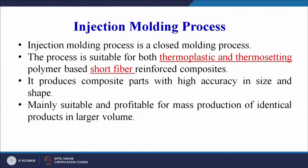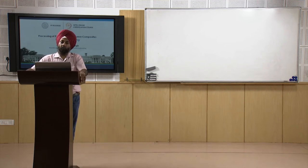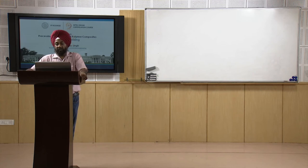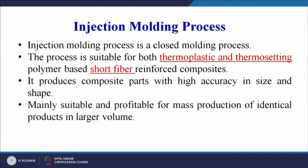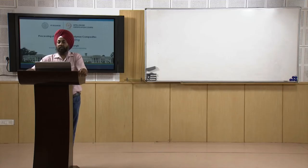Injection molding is a closed molding process suitable for both thermoplastic and thermosetting polymer-based short fiber reinforced composites, though the majority of applications use thermoplastic-based composites. It produces composite parts with high accuracy and shape — a characteristic advantage of closed mold processes is very good surface finish and high dimensional accuracy.